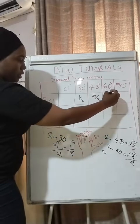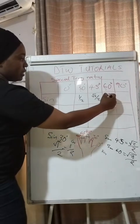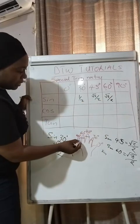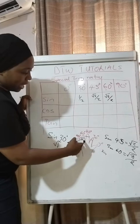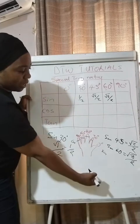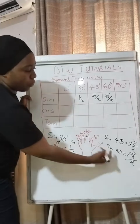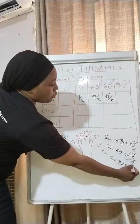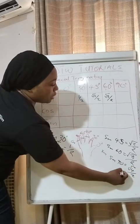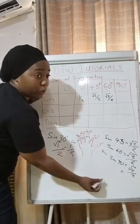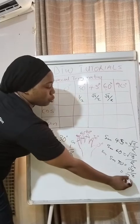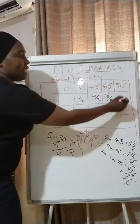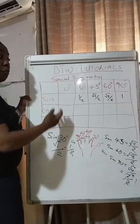For sine 90, fold down the little finger. How many fingers are to the right? Four. So sine 90 = √4 / 2 = 2/2 = 1. We've now quickly completed the entire sine column of our table.